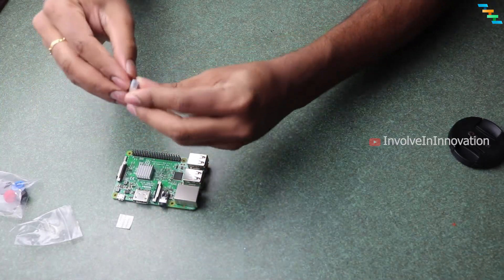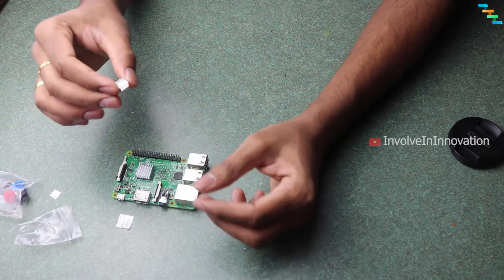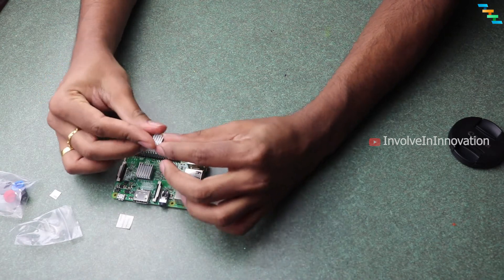Then peel the sticker in the smaller Heatsink, then stick it to the network chip. Apply gentle pressure to stick it.